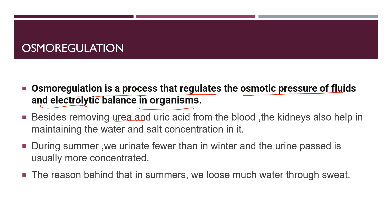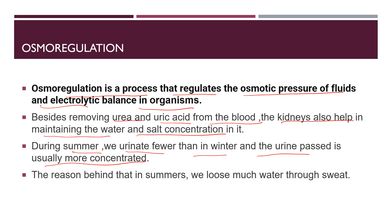Besides removing urea and uric acid from the blood, the kidneys also help in maintaining the water and salt ion concentration in our body. The sodium-potassium level is always maintained in the body with the help of sweat and the kidneys. During summer we urinate less than in winter because the urine is more concentrated in summer as we are sweating profusely, and sodium-potassium ions are released from our body through the excretory organs.